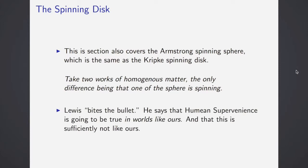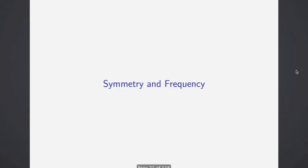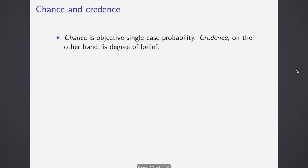Lewis bites the bullet on this one. He says that Humean supervenience is contingent, so it's going to be true in worlds like ours, and that this world is not sufficiently like ours. So it's interesting that Humean supervenience is contingent, it's not going to be necessarily true, but whatever the case, let's move on. Here are those two candidates for what chance might be.